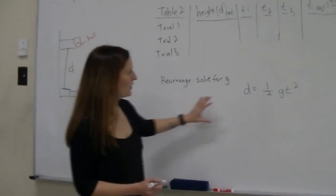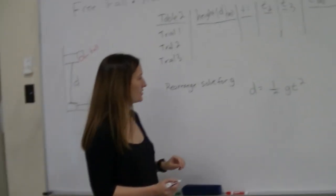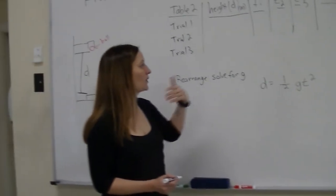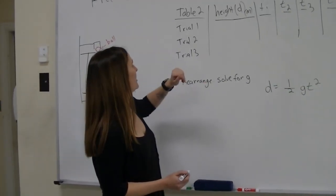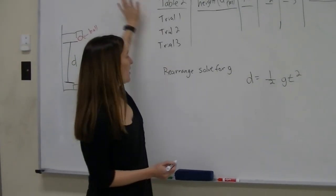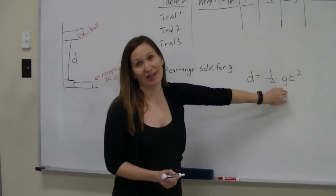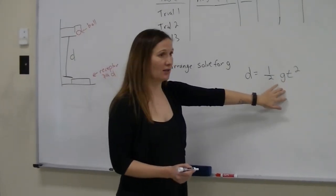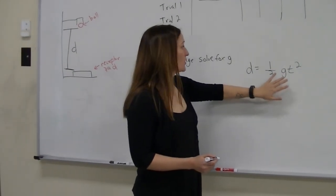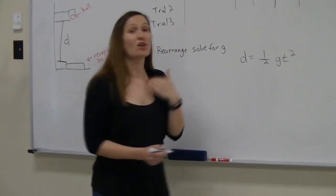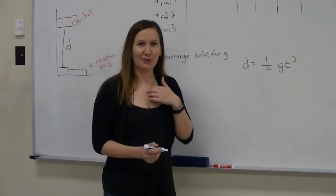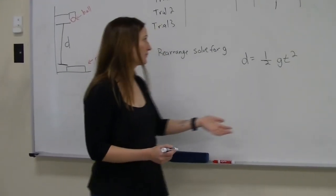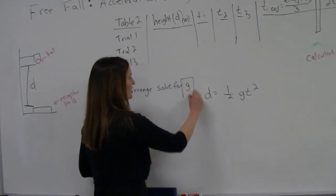So you've seen this equation before. It's a non-zero velocity equation, and when we use zero initial velocity equations in free-fall experiments, we change our A to G, because gravity is the only thing affecting in free-fall. So our A is now G, but we're going to solve for G, because what we're trying to figure out is what's our value so that we can compare it to the actual. So we're going to rearrange to solve for G.